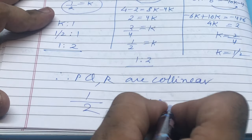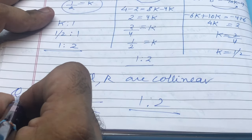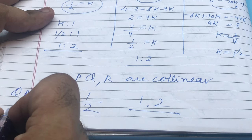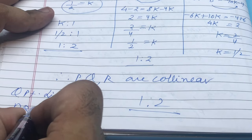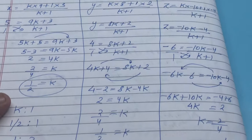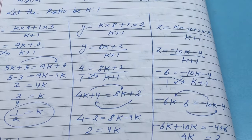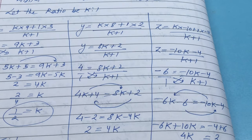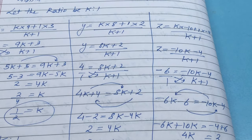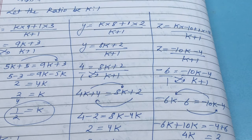So the ratio is 1:2. Q point divides PR in ratio 1:2. This was a different type of question — using the section formula to prove collinearity. This is a new method compared to what you learned in Class 10. After this, let's do Question 3.